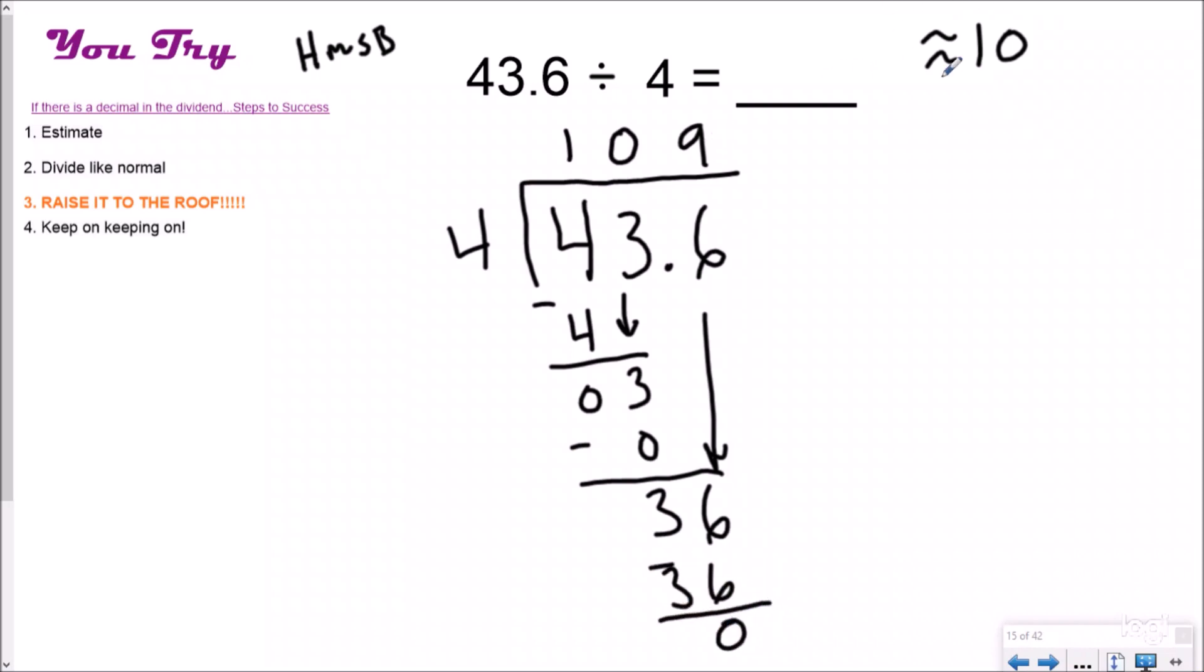And now my estimate was about 10. I have 109, which means I did something wrong. And oh yeah, I forgot to raise it to the roof. And you can actually do that first if you want, as long as you do it. And then your answer should be 10.9. So you're dividing like normal. You're just raising it to the roof.